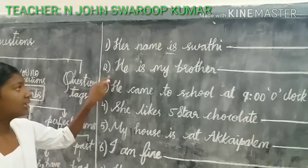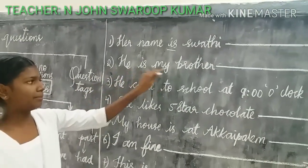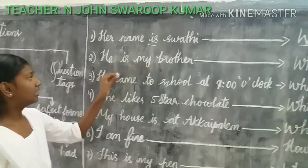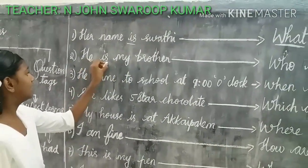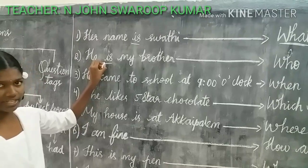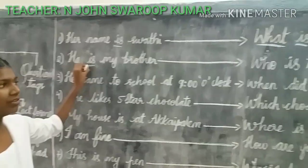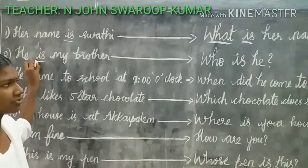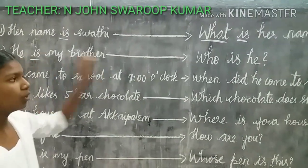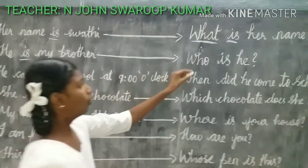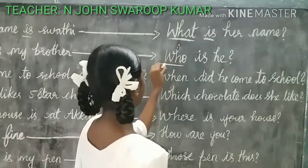The second example is: he is my brother. Here 'is' is an auxiliary verb and we use the WH question word 'who.' So the framed question is: Who is he?